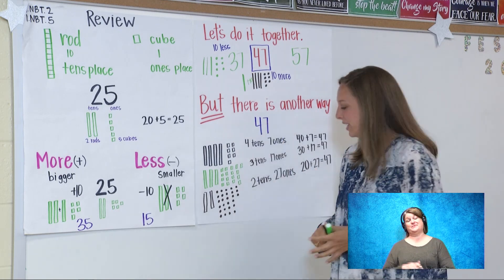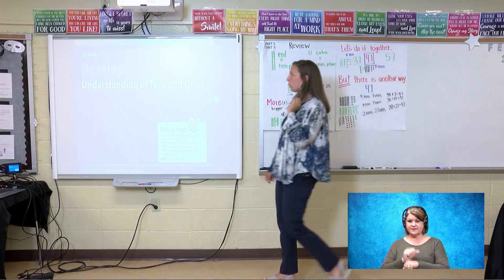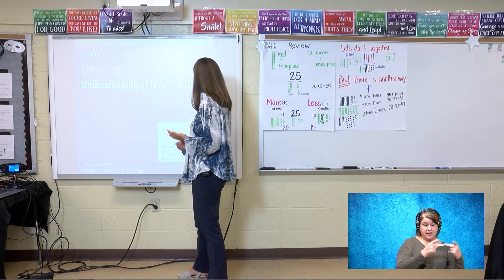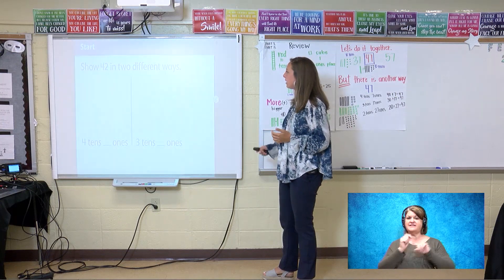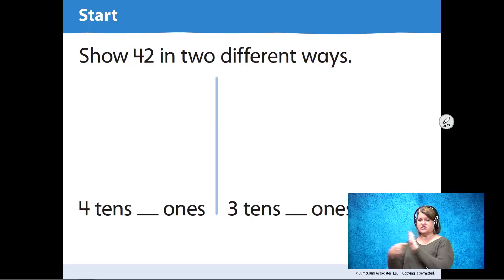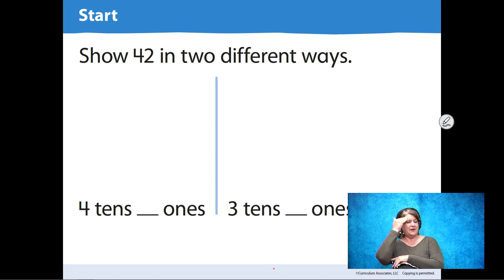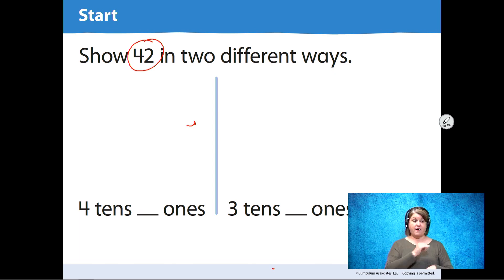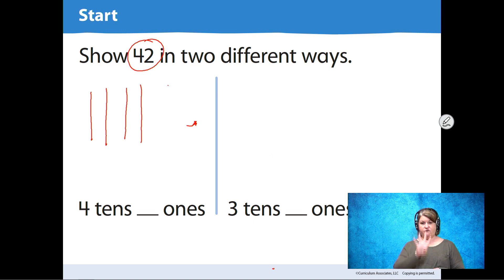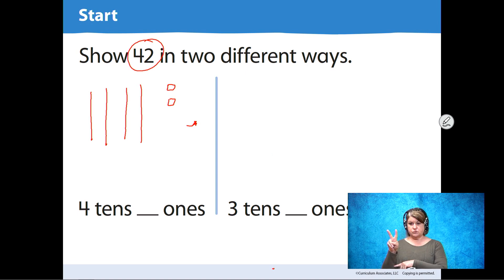All right, let's look over here to do some more problems. We're still understanding our tens and our ones and we're going to try it another way. This one says show 42 in two different ways. Our number is 42. So I'm going to draw my four tens because the four is in the tens place: 1, 2, 3, 4 tens, and my two ones. That gives me the number 42. I have four tens and two ones.